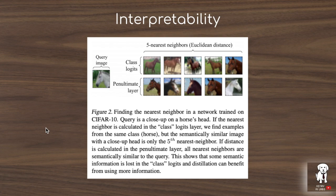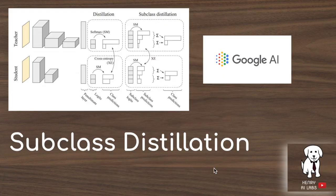One interesting future implication of subclass distillation is interpretability. Having the teacher network automatically invent subclasses by imposing a contrastive loss gives insight into how it makes predictions — you can visualize what kind of images it clusters together in a more meaningful way than low-dimensional projections like t-SNE, because the teacher is actively doing this clustering in the loss function. Thanks for watching this explanation of subclass distillation — a technique where the teacher invents subclasses to provide more training signal to the student network, especially useful for binary classification or low-label problems. Please subscribe to Henry AI Labs for more deep learning and AI videos.